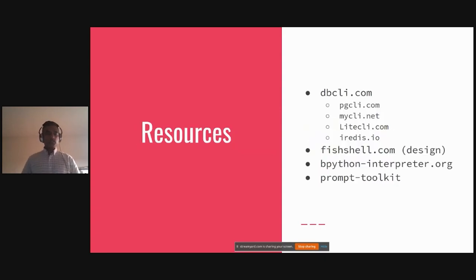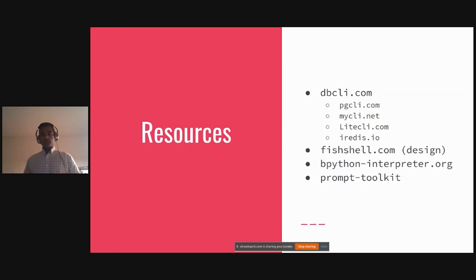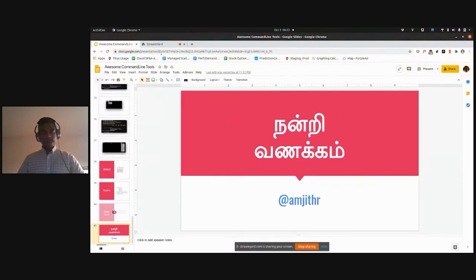The resources I covered today: DBCLI is the GitHub organization with multiple clients — pgcli, mycli, litecli for SQLite, and iRedis. Fish Shell has a fantastic design philosophy document worth checking out. bpython is my favorite Python REPL that I use daily. And prompt_toolkit is the library that allows you to build rich command line applications with auto-completion, auto-suggestion, and so forth. Thank you very much.